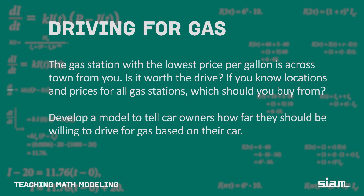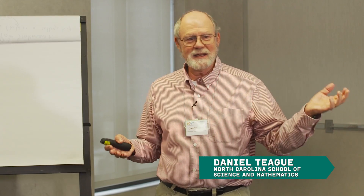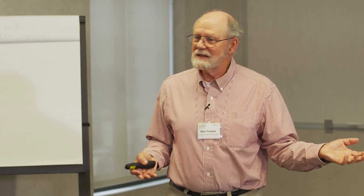This is the problem of driving for gas. The basic structure is there's a route that you normally take, and there's likely to be some gas stations close to that route which sell gas for some price — that's the most convenient. But there's often times a gas station several miles off your normal route that's selling gas for significantly less. So the natural question is: under what conditions would you want to drive the distance to the farther gas station to purchase gas?